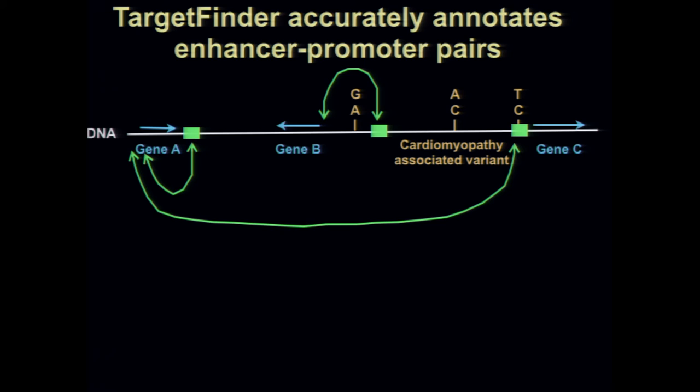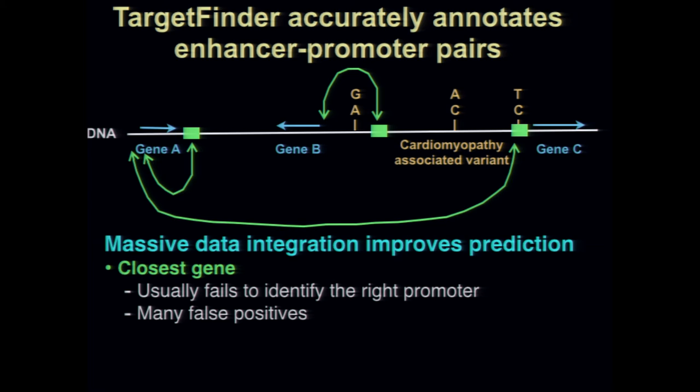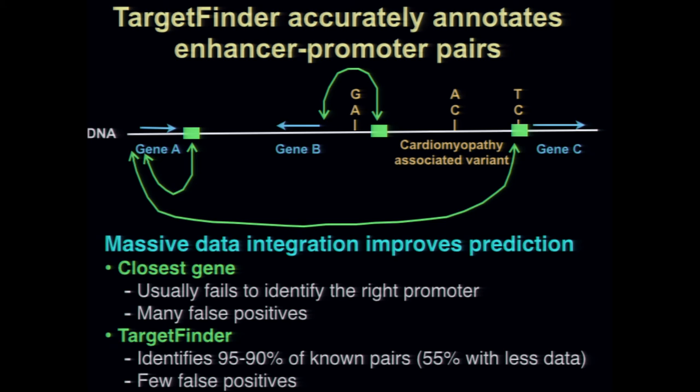To summarize the Target Finder project: our goal was to predict these interactions from marks on the DNA. It improves significantly upon using the closest gene, which is frequently wrong. We can get more than 90% of known pairs at a low false positive rate, and in a worst-case scenario on a different cell line with less data, maybe 55% recall. The most important thing is that the false positive rate is really low — our precision was high and our false discovery rate was very low.